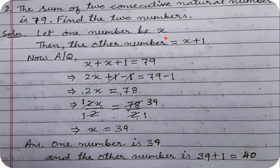If the first number is x, the second is x + 1. According to the question, their sum is 79, so x + (x + 1) = 79. We have like terms here — x and x are like terms with the same variable. We can add them: 1x + 1x = 2x, so the equation becomes 2x + 1 = 79.